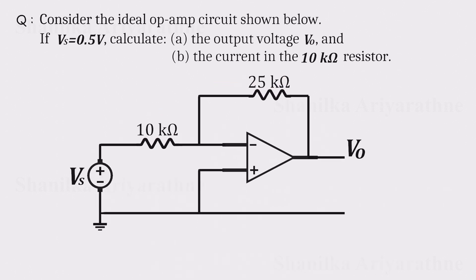First, let's label the nodes and currents. We'll call the voltage at the inverting input V1. The bottom node is ground, so that's 0 volts. The non-inverting input is tied directly to ground as well, so it's also at 0 volts.